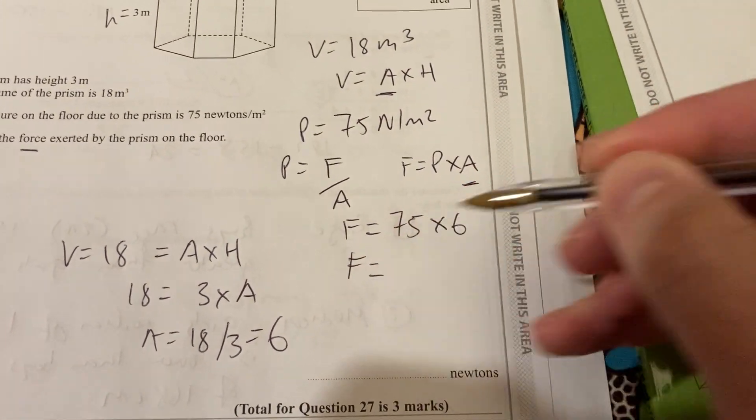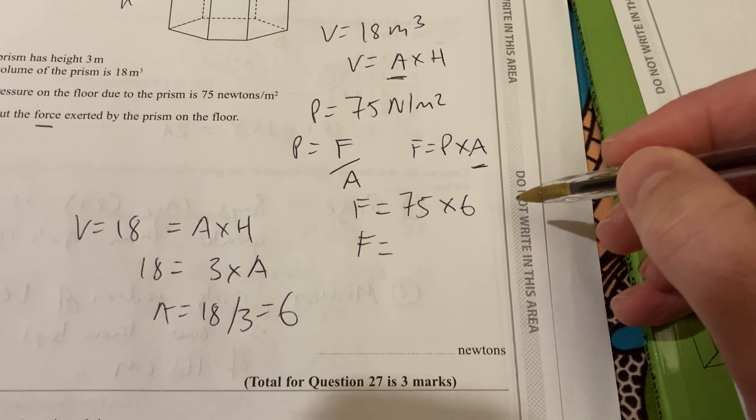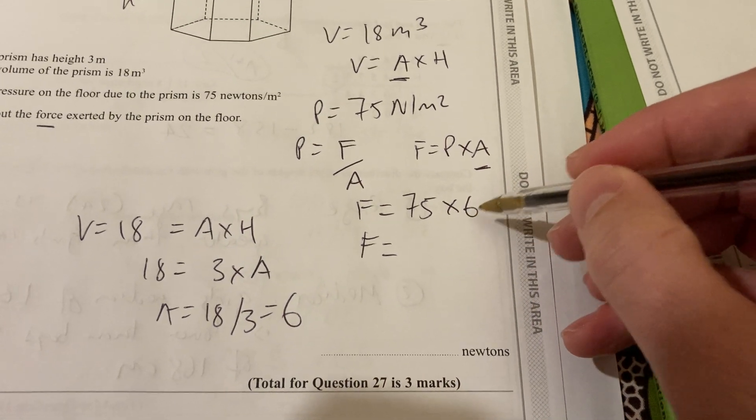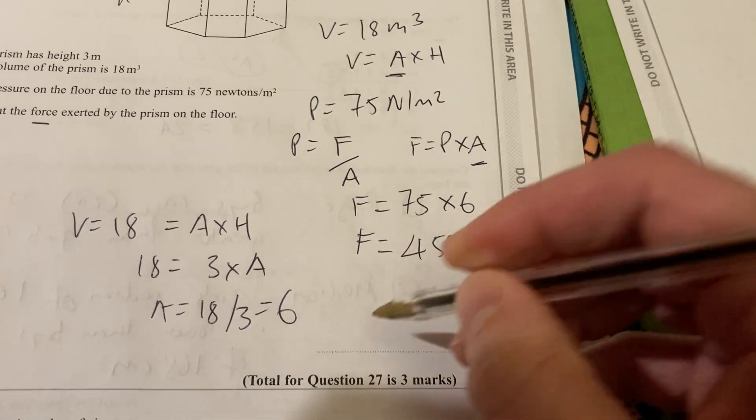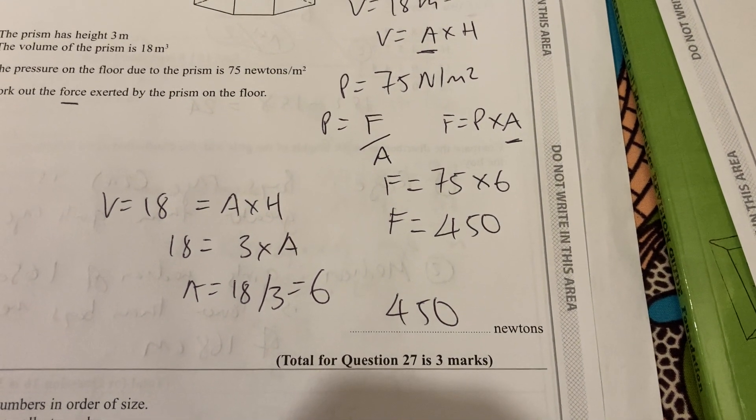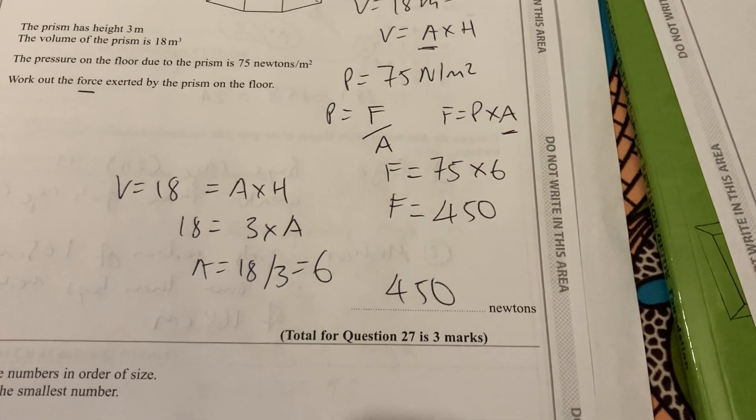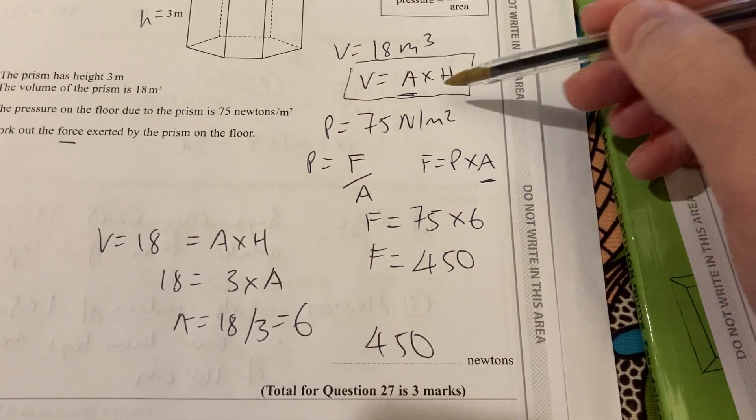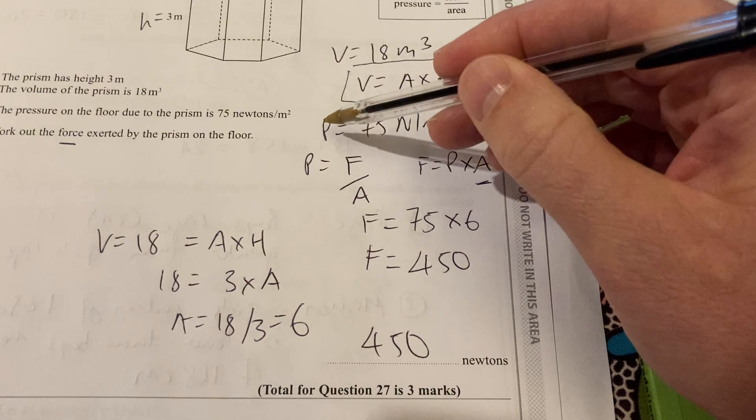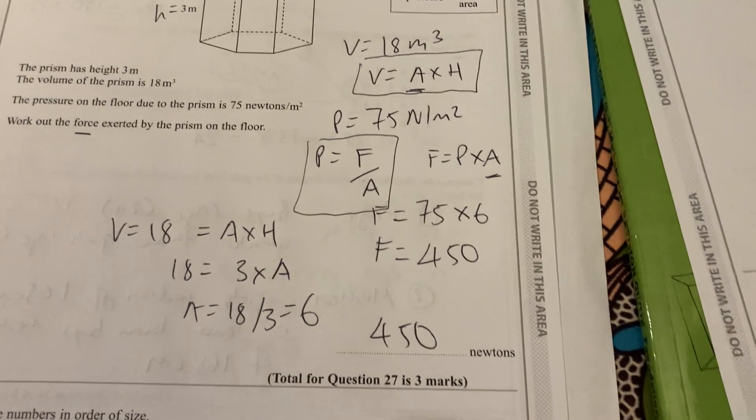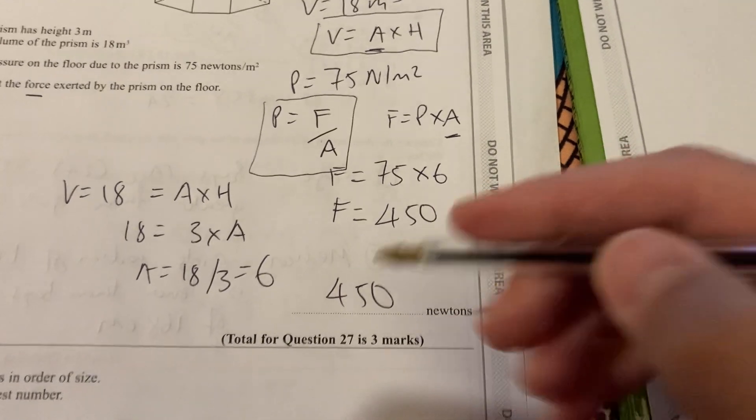And all this formula here. The formula is force equal to 75 times that 6. So the force is equal to, again, it's a non-calculator paper. I know 2 times 75 is 150. And then 2 times 3 is 6. So it'll be 450. So 450 newtons there. Okay. You may be able to do that in fewer steps, but that's how I work it out, using that volume and that pressure compound measures formulae. Okay. So that's three marks there.